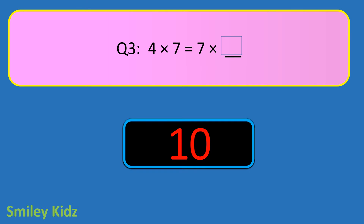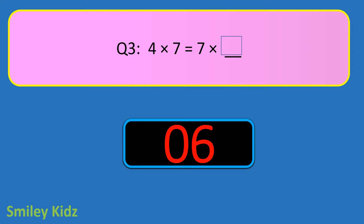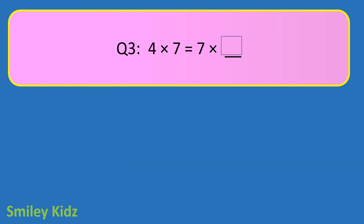Question number 3. 4 times 7 is equal to 7 times blank. Your time starts now. And your time is up. The right answer is 4. 4 times 7 is equal to 7 times 4.